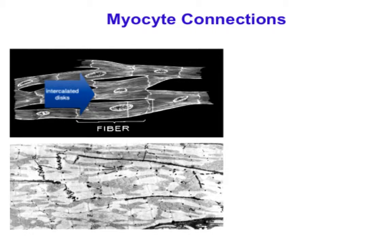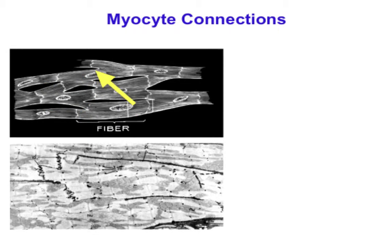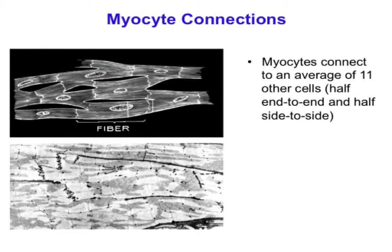The intercalated disks connect cells primarily end-to-end, but not all end-to-end. For example, here you see a junction at the end of one cell connecting to a cell that's more on the side. On average, at least in the mouse, one myocyte is connected via these junctions directly to 11 other myocytes—about six at the ends, approximately three at each end, and five primarily around the sides.